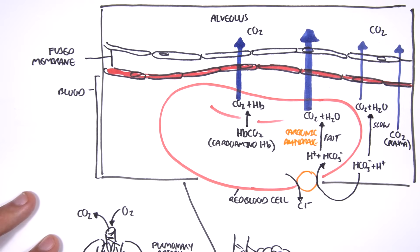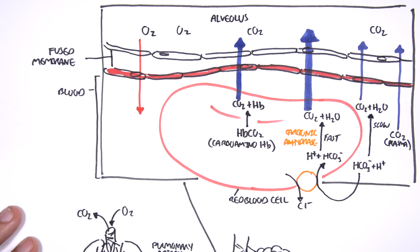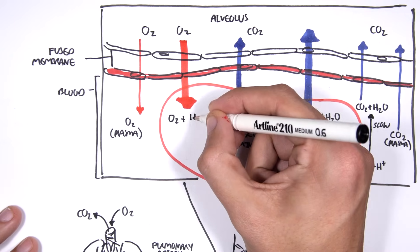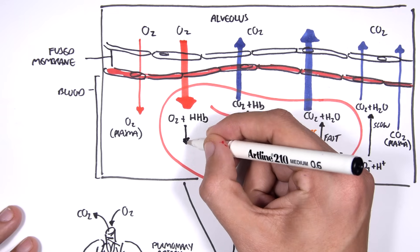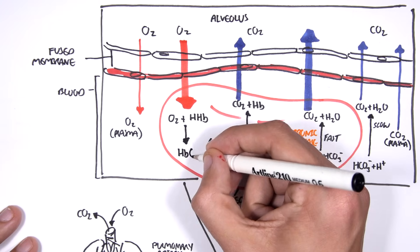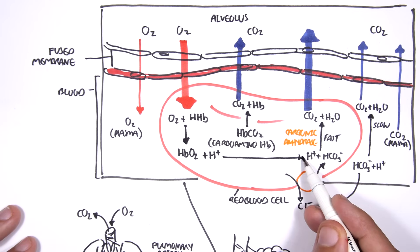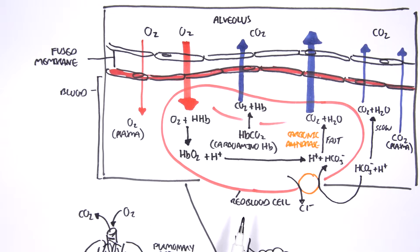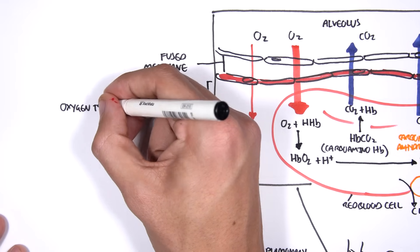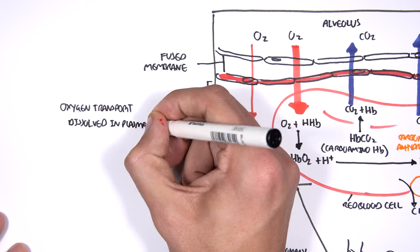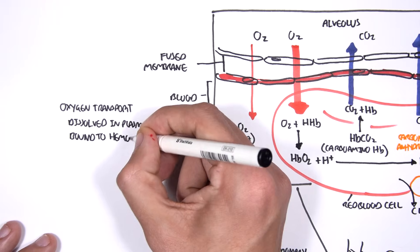Now we have a lot of carbon dioxide in the alveolus. Our lungs will exhale this carbon dioxide, and then we'll inhale oxygen. Oxygen enters the alveolus and can be transported via two ways. A small amount will be transported dissolved in plasma. However, most of the oxygen will enter the red blood cell and bind to hemoglobin — forming oxyhemoglobin. The hydrogen ion released here supplies the bicarbonate reaction. To summarize oxygen transport: less than 2% is dissolved in plasma, and 98% or more is bound to hemoglobin.